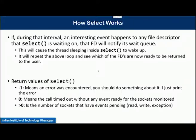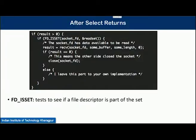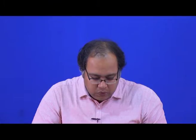The return value of select has three possible values: minus 1 means an error has occurred, 0 means a timeout happened, and greater than 0 means the number of sockets that have an event pending - whether for read, write, or exception. After select returns, you can use the function fd_isset to test whether a file descriptor is part of the set - if the file descriptor is set and it is a read file descriptor, you have something to read; if it is a write file descriptor, you have something to write. Now let us look at code that uses this select call.